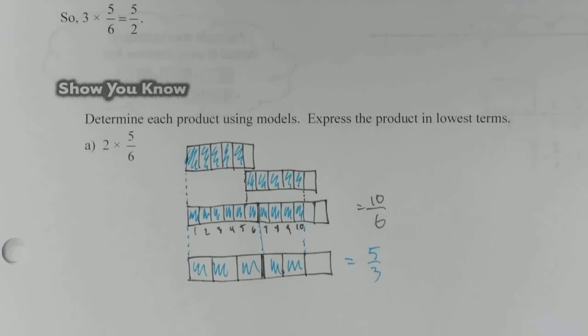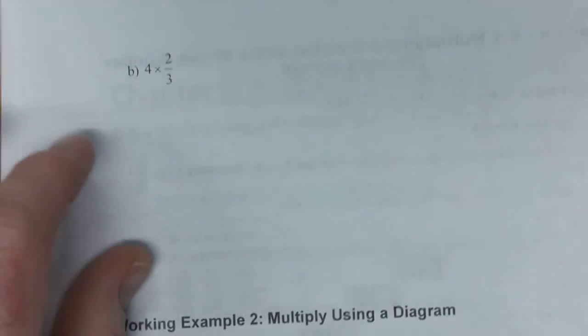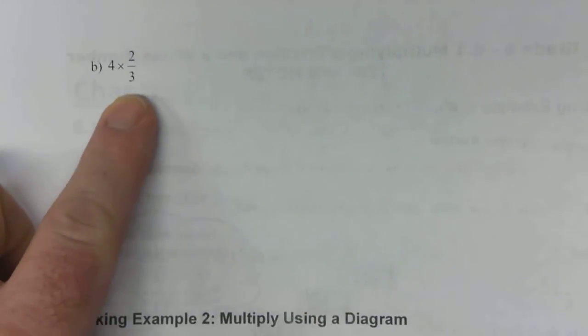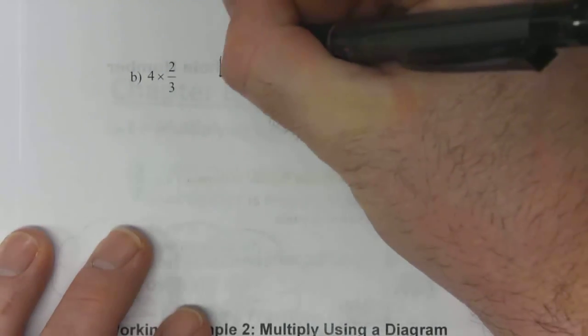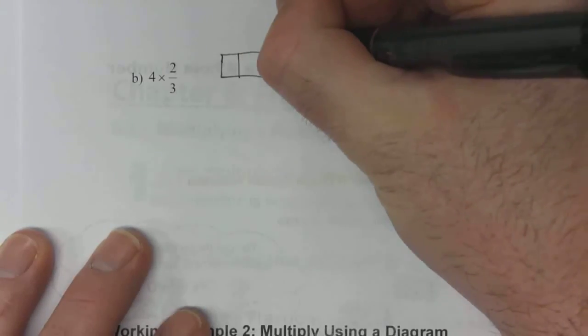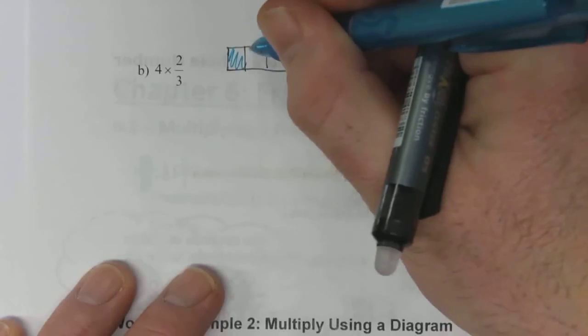So our answer here in lowest terms happens to be 5/3. Part b is asking for 4 times 2/3. So again, one strip broken into thirds, 2/3 of it is shaded.